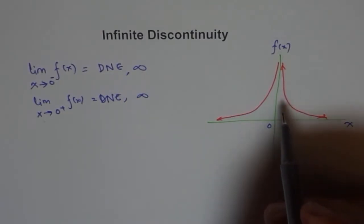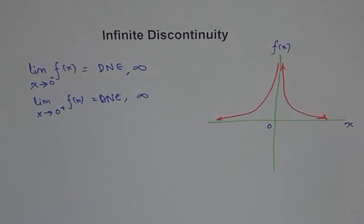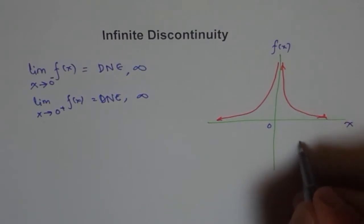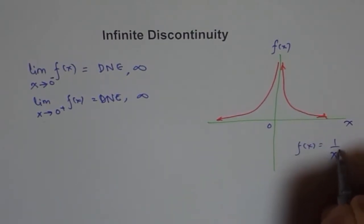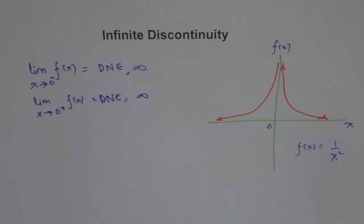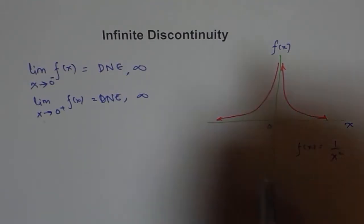This kind of discontinuity is called infinite discontinuity. This function could represent, let's say, f(x) equals 1 over x squared. You may get a graph like this. It is not necessary that for infinite discontinuity we should approach infinity towards the positive side, or something like that.